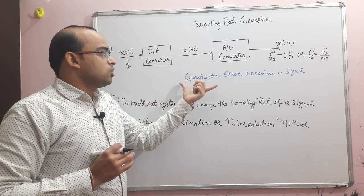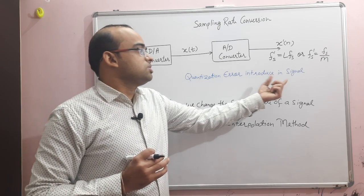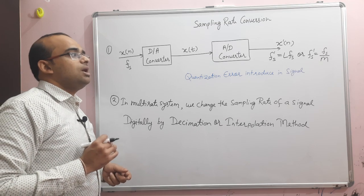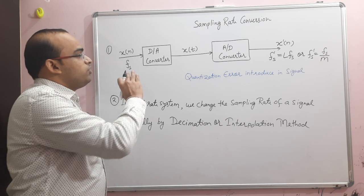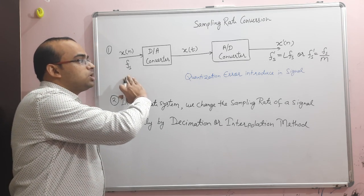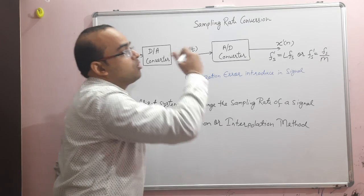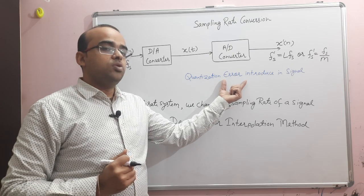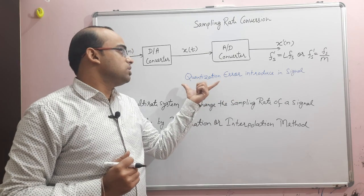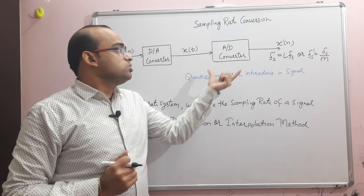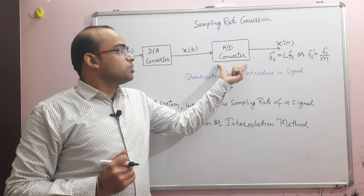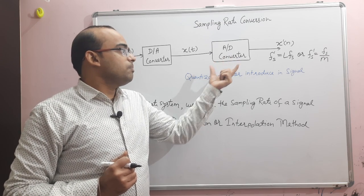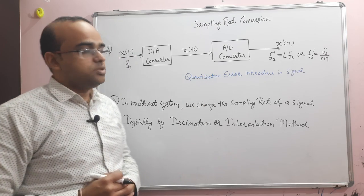But the disadvantage of this method is that quantization error is introduced in the signal. Since we are changing the signal from digital to analog and then back to analog to digital, some error will obviously be introduced, and this type of error is called quantization error — it is introduced during the quantization step, which is the second step in A-to-D conversion.